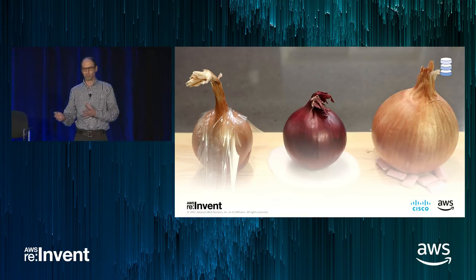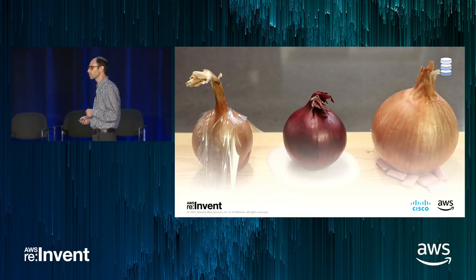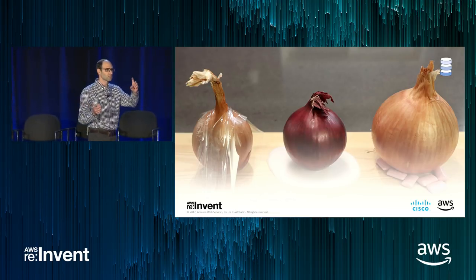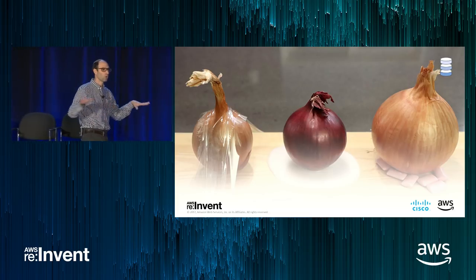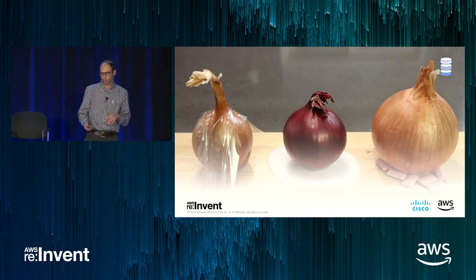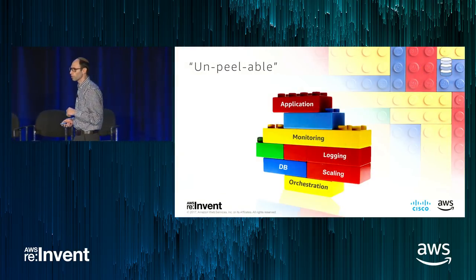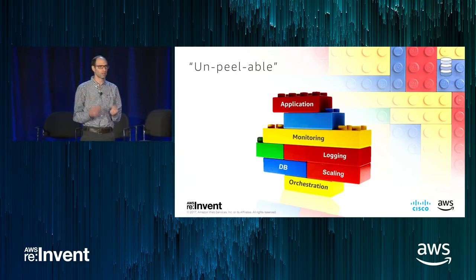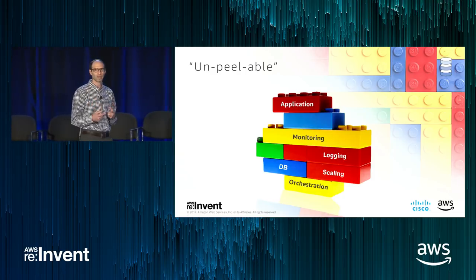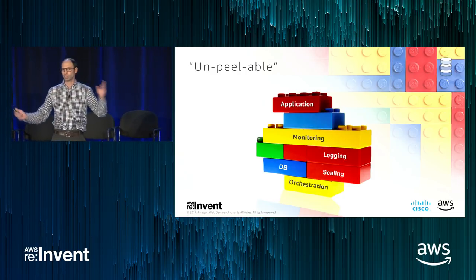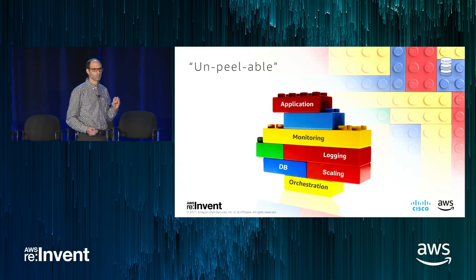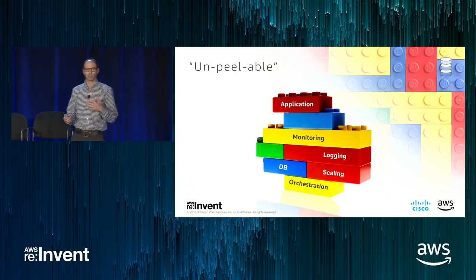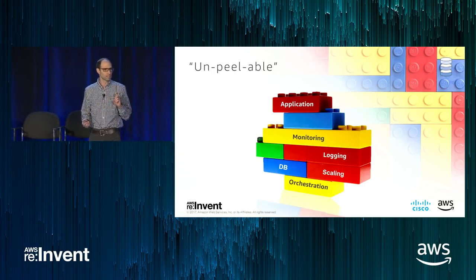We thought when we started this journey we could just peel off the onion and select out the applications, creating one new common denominator — a common platform for all of them. But when you start peeling layers, these things are very intertwined and connected. The libraries, the way they managed scale, the way they did logging — it made it very hard to just remove layers and extract the application. Most times we extracted the logic and rewrote the application. This was a big challenge, but it actually gave us a lot of velocity and we achieved it much faster.